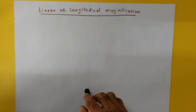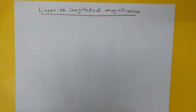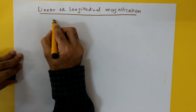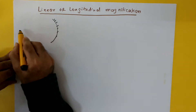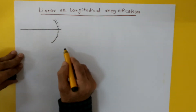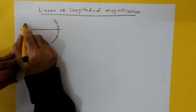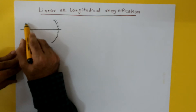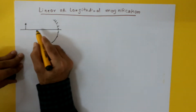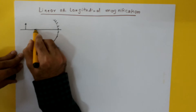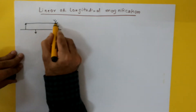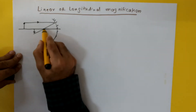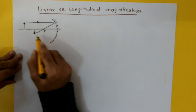In this video we will look at the concept of linear or longitudinal magnification. Let's say we have a concave mirror and this is the principal axis of the mirror. When we have an object placed perpendicular to the principal axis, we generally get a real inverted image. The ray which passes parallel to the principal axis passes through the focus and meets to form an image.